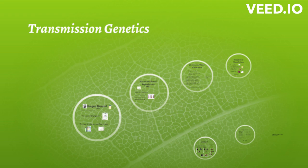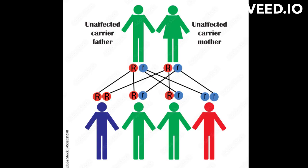One example of the application of transmission genetics is in the study of Mendelian inheritance. Mendelian inheritance is a form of inheritance in which a specific trait is determined by a single gene and follows a predictable pattern of inheritance. Gregor Mendel, a monk and scientist, first described these patterns by studying the inheritance of seed color and shape in pea plants.